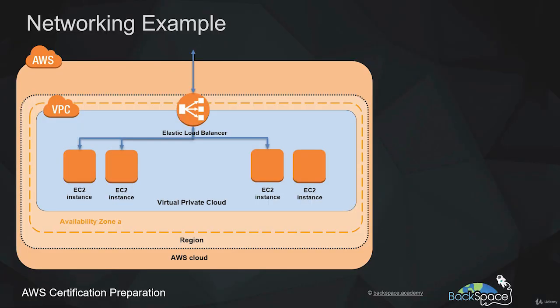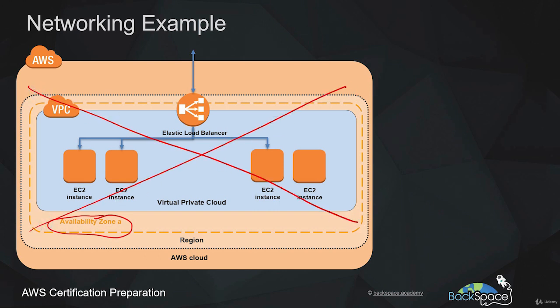Let's have a look at an example of how we can use these networking services. We have the architecture from the compute section, but one thing we didn't mention was availability zones. Let's say we've launched that architecture in a single availability zone. What happens if that availability zone goes down? Our traffic has nowhere to go and our application stops delivering responses to requests.